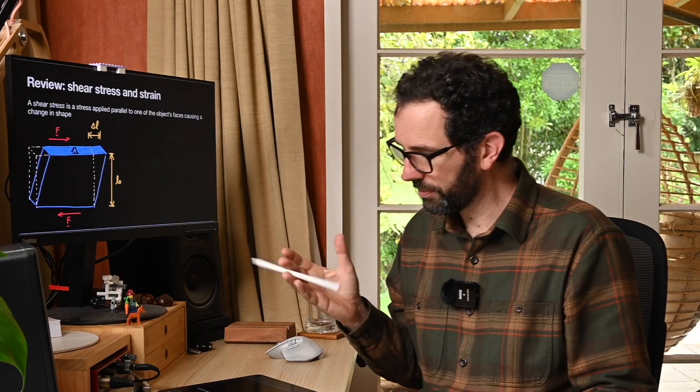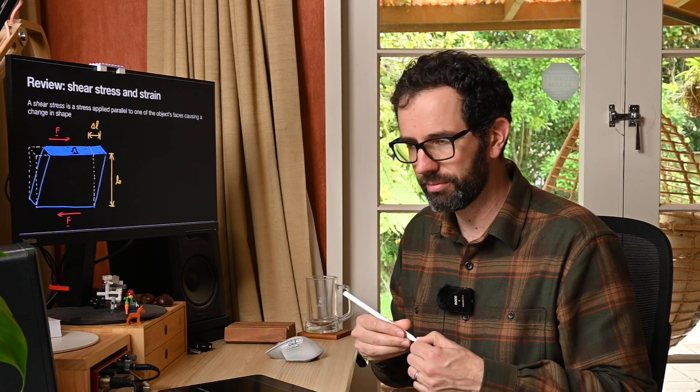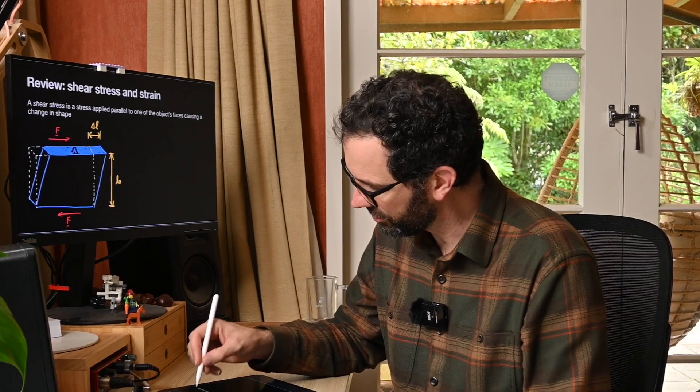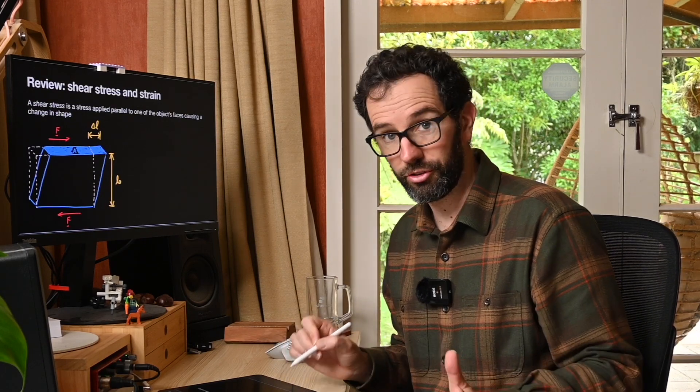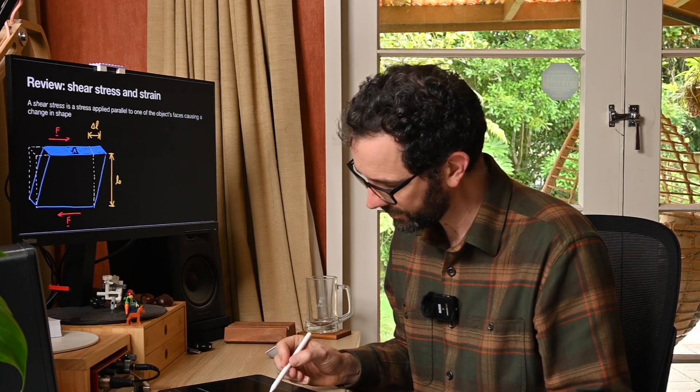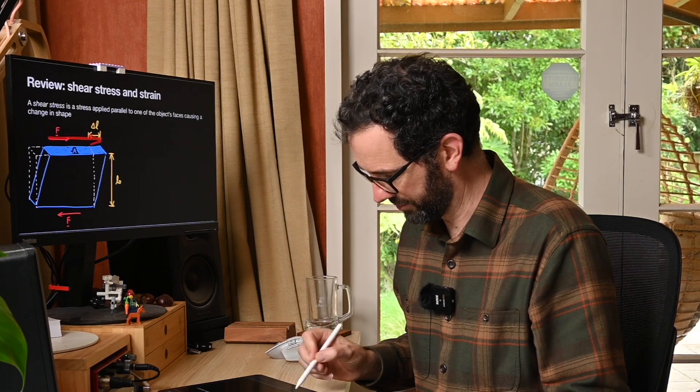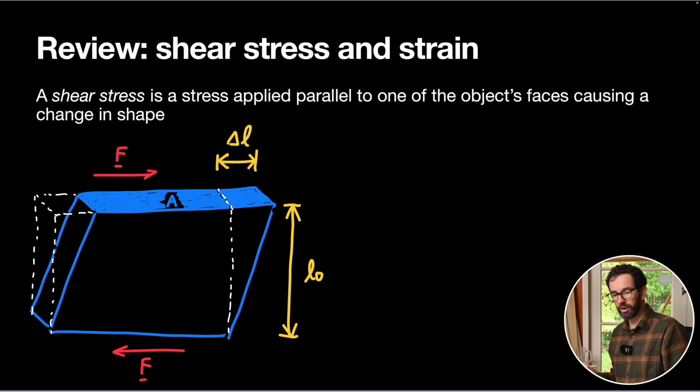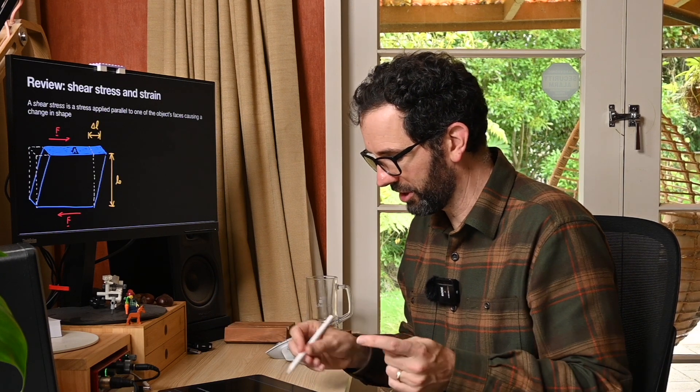We talked about shear stress back in our video on stresses and strains. We didn't really talk much about it other than to mention that it's a thing that exists. So let's have a quick reminder. Here's the shear stress and strain for a solid. We're applying a force parallel to the top face of our solid, for example our sponge. What we find is that the solid tends to turn itself into a parallelogram type shape like this one here.